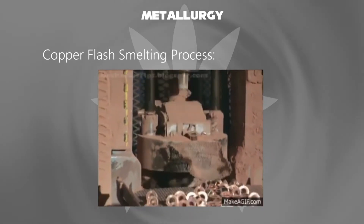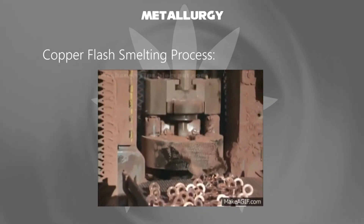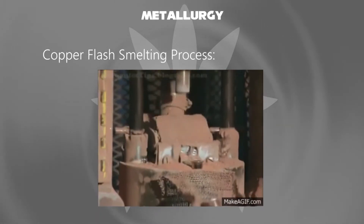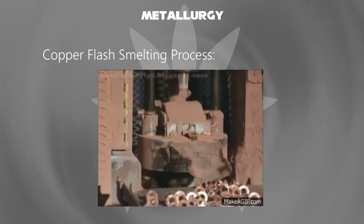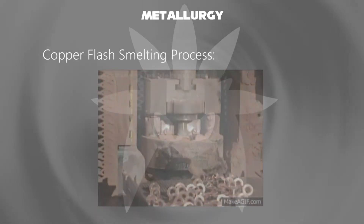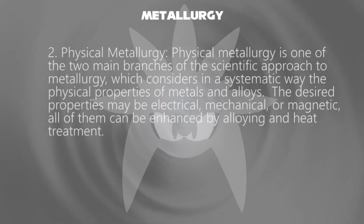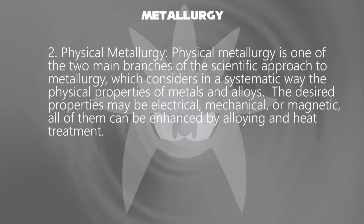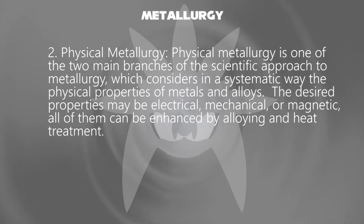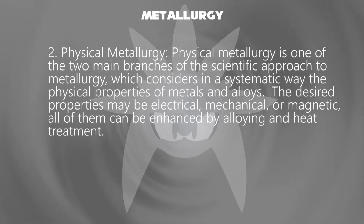They are widely used in various industries for manufacturing of products, parts, components, etc. in the factory. On the other hand, physical metallurgy is one of the two main branches of the scientific approach to metallurgy, which considers in a systematic way the physical properties of metals and alloys.